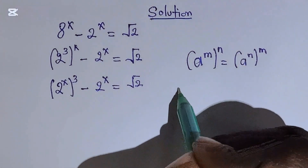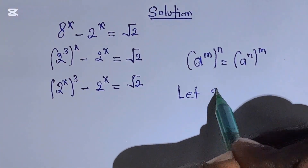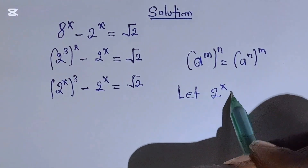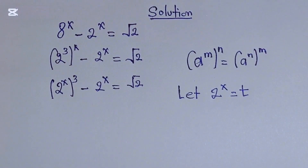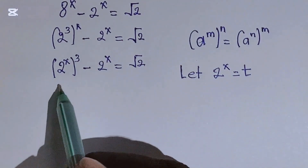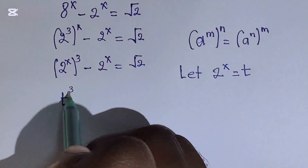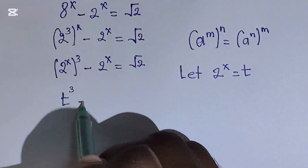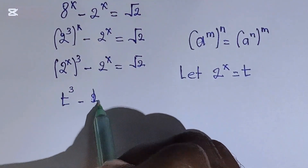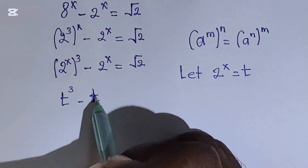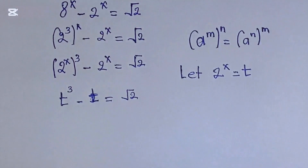At this stage, we can write our 2 to the power of x which is equal to t. Now, this will be equal to t to the power of 3 minus t, which is equal to root of 2.